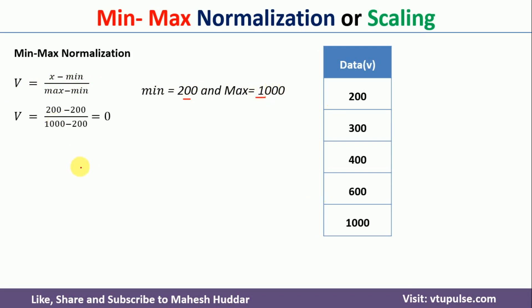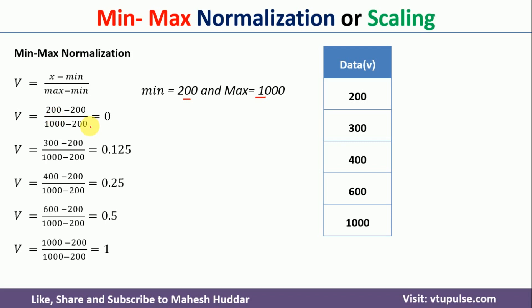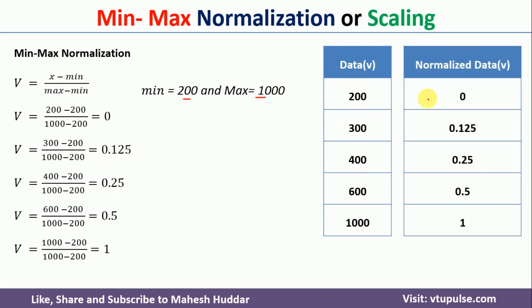Once you put these particular values into this equation, you will get 0 as the normalized value with respect to 200, 0.125 as the normalized value with respect to 300, and so on. These are the normalized values with respect to the min-max normalization.